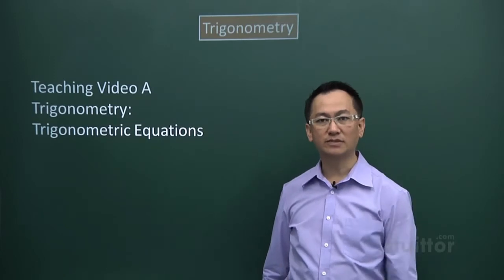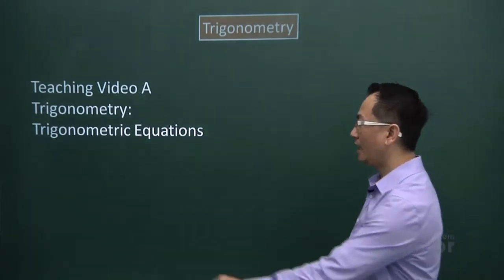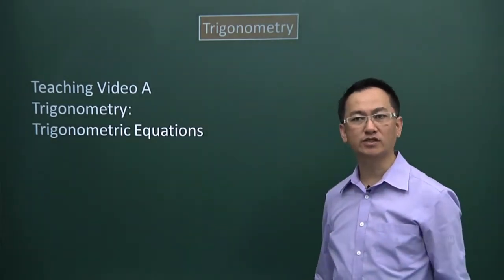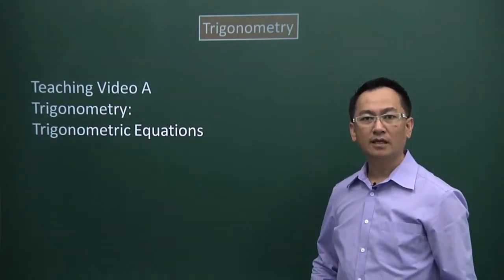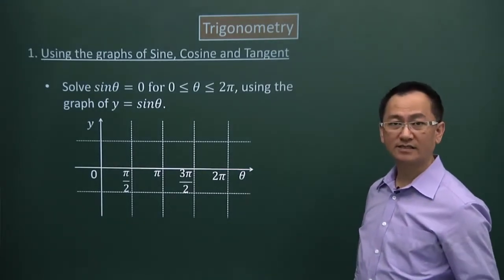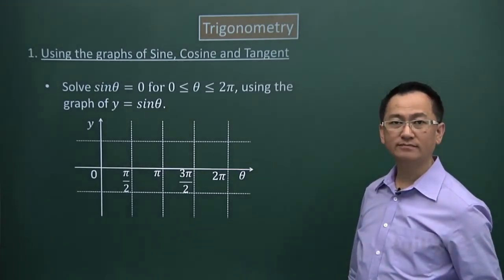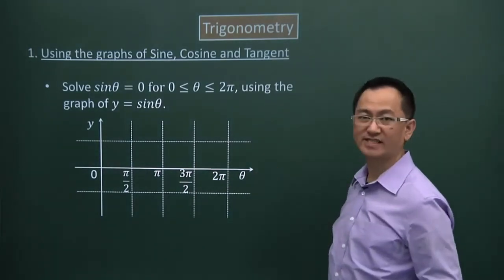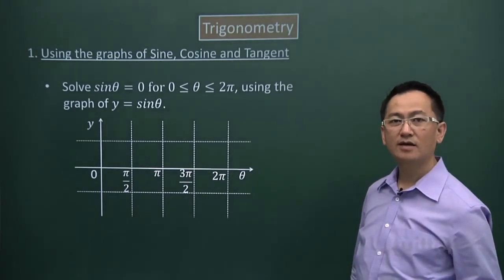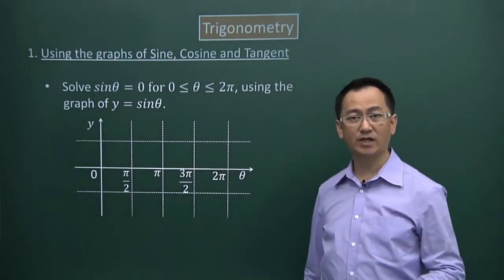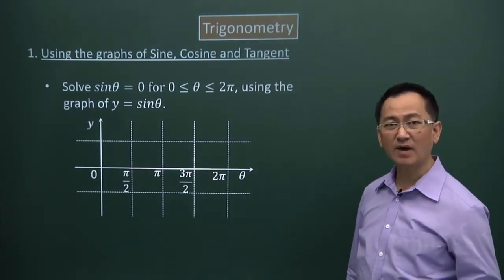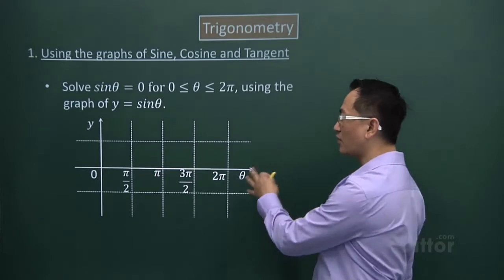We are now looking at the teaching video on trigonometry, and the specific part we want to look at is trigonometric equations. There are two ways to solve a trigonometric equation. The first one we want to look at is using the graph of sine, cos, and tangent. But this is not going to be an accurate way of solving the equation, though it offers some useful understanding.